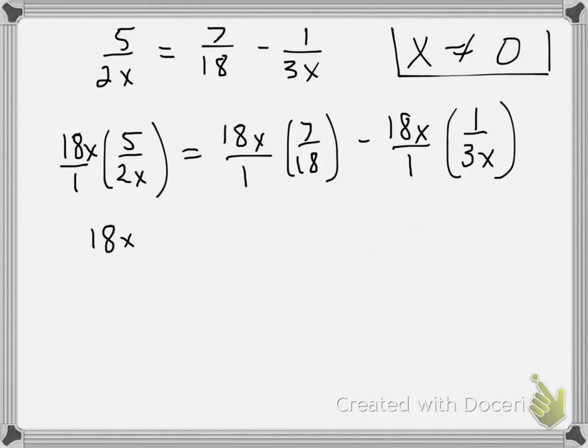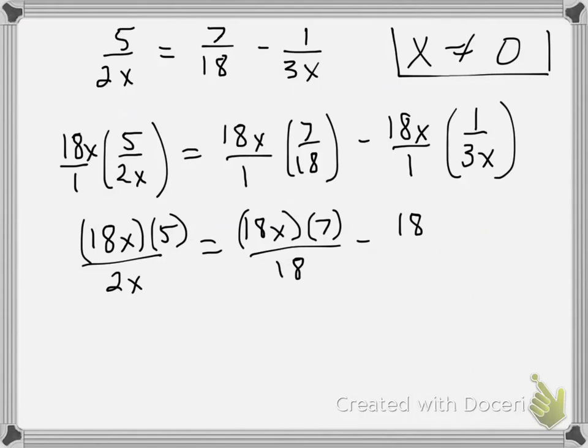Well, that gives me 18x times 5 all divided by 2x equals 18x times 7 all divided by 18 minus 18x times 1 all divided by 3x.